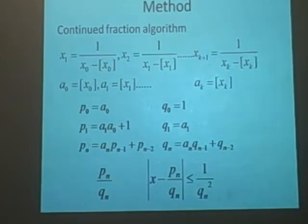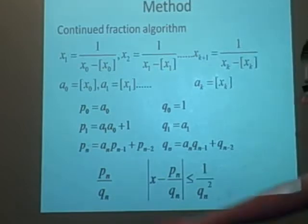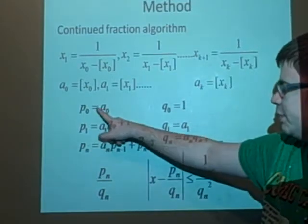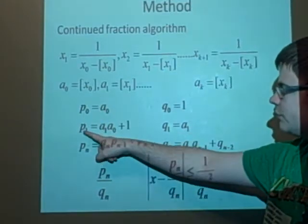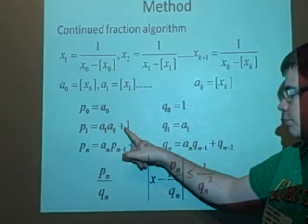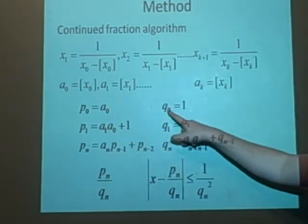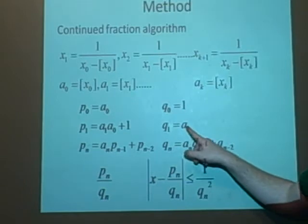We can use a method to approximate our values. So if it's a rational number, then it's quite useful to find an approximation. So we use these initial things here, with p naught is a naught, p1 is a1 times a naught plus 1, q naught is 1, q1 is a1.